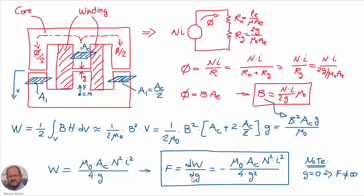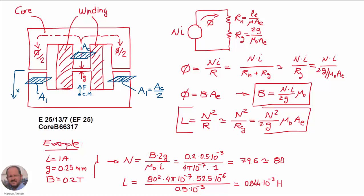To obtain the final force expression, we take the derivative of the energy with respect to the length of the gap — equivalent to the x direction. It is important to note that if the gap is zero, the force might seem infinite, but this is not true. The trick is in the approximation: we assumed the reluctance of the gap is much higher than the reluctance of the core. If the gap is very small, this approximation does not hold and we must use the full equation.